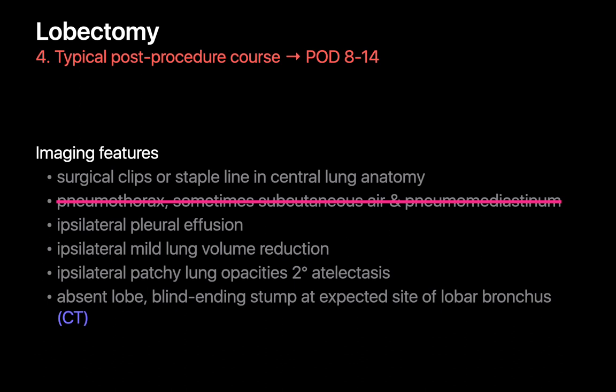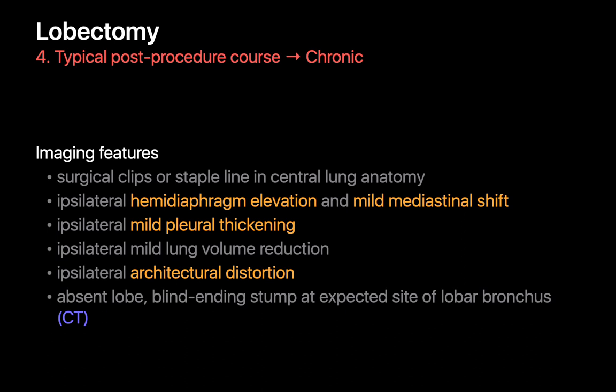During week two post-lobectomy, any pneumothorax, subcutaneous emphysema, and pneumomediastinum have usually resolved, though ipsilateral pleural effusion, mild ipsilateral lung volume reduction, and atelectasis may still be present. If the patient's course has been smooth, we usually won't see many serial chest x-rays past the two-week mark. On chronic post-lobectomy chest x-rays, typical findings include mild ipsilateral lung volume reduction with mild hemidiaphragm elevation and mediastinal shift towards the side of the lobectomy, mild pleural thickening, some architectural distortion, and direct evidence of lobe resection on CT.